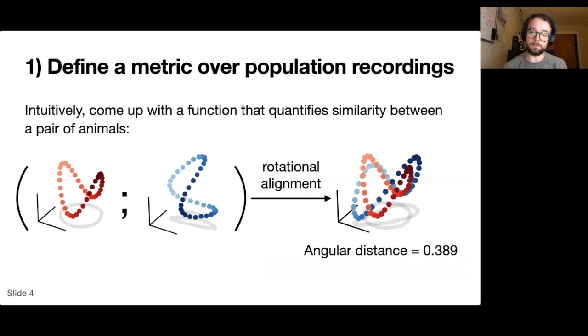We can either use a typical Euclidean distance between vectors to do this calculation, or we can use the angular distance, which is inversely related to a kind of aggregate correlation coefficient.